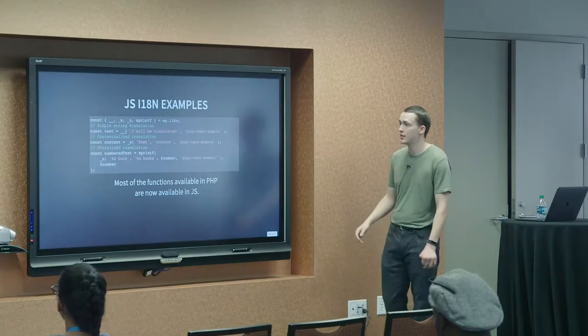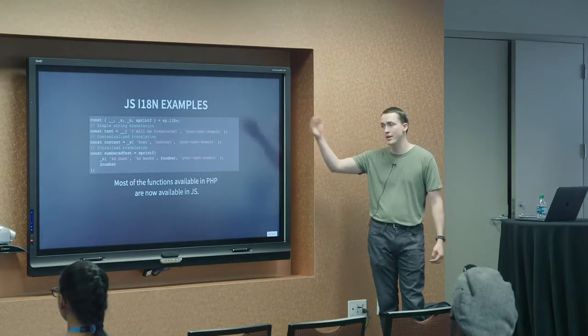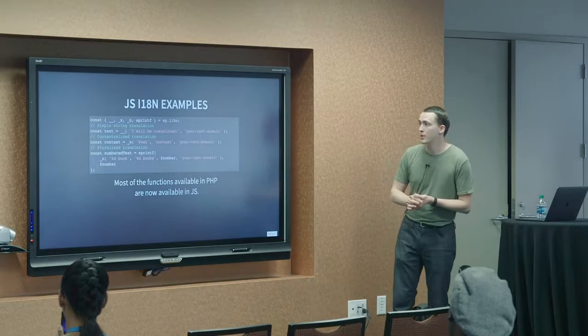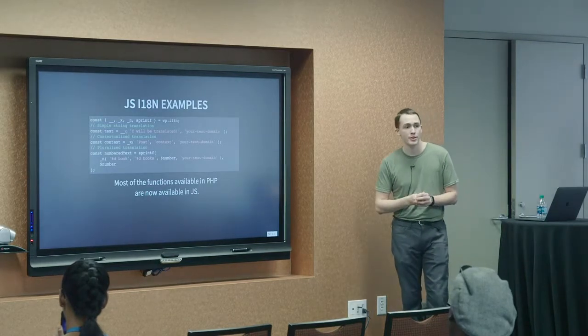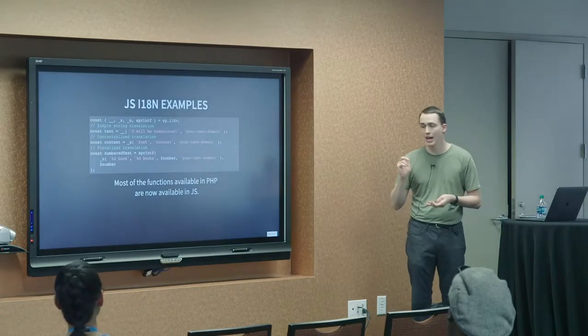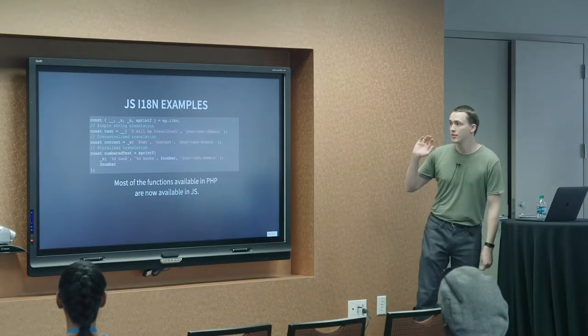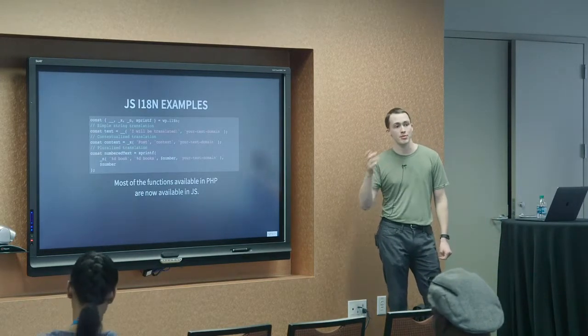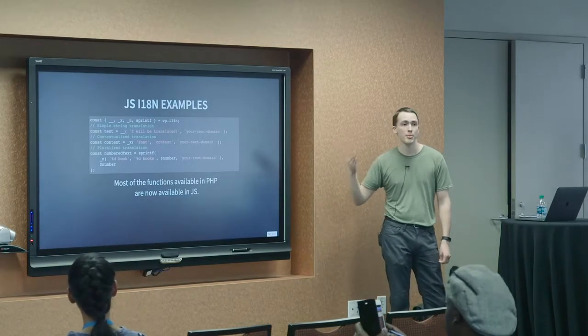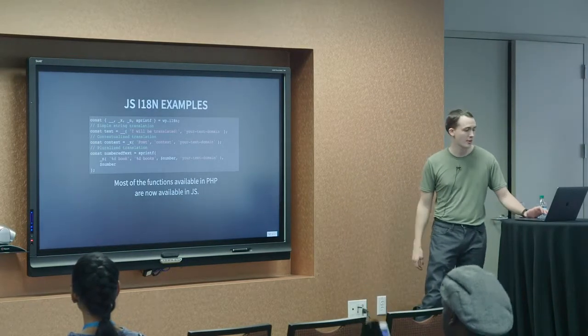So, just like in PHP, you have a double underscore, you have an underscore x, underscore n, and you have access to sprintf. These are all part of WordPress's i18n JavaScript package. They're available as long as the script is loaded. And, in most cases, if you are telling WordPress that you have a script that uses internationalization, it will actually ensure that all the proper dependencies are loaded. But, I still recommend making sure you have all the dependencies there.